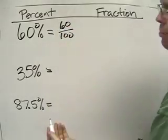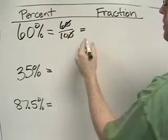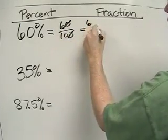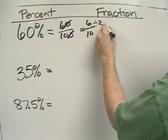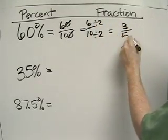And then we just reduce. A nice easy way to reduce is to cross off the zeros. Now you get 6 over 10, and then divide by 2, the numerator and the denominator, you get 3 fifths.